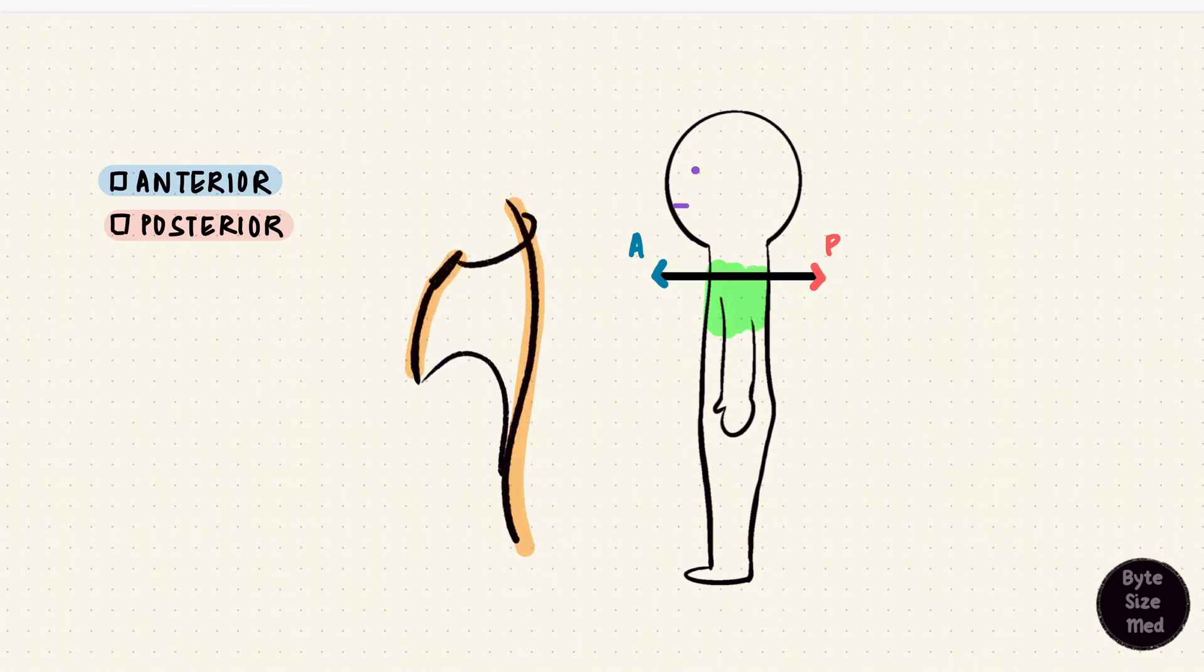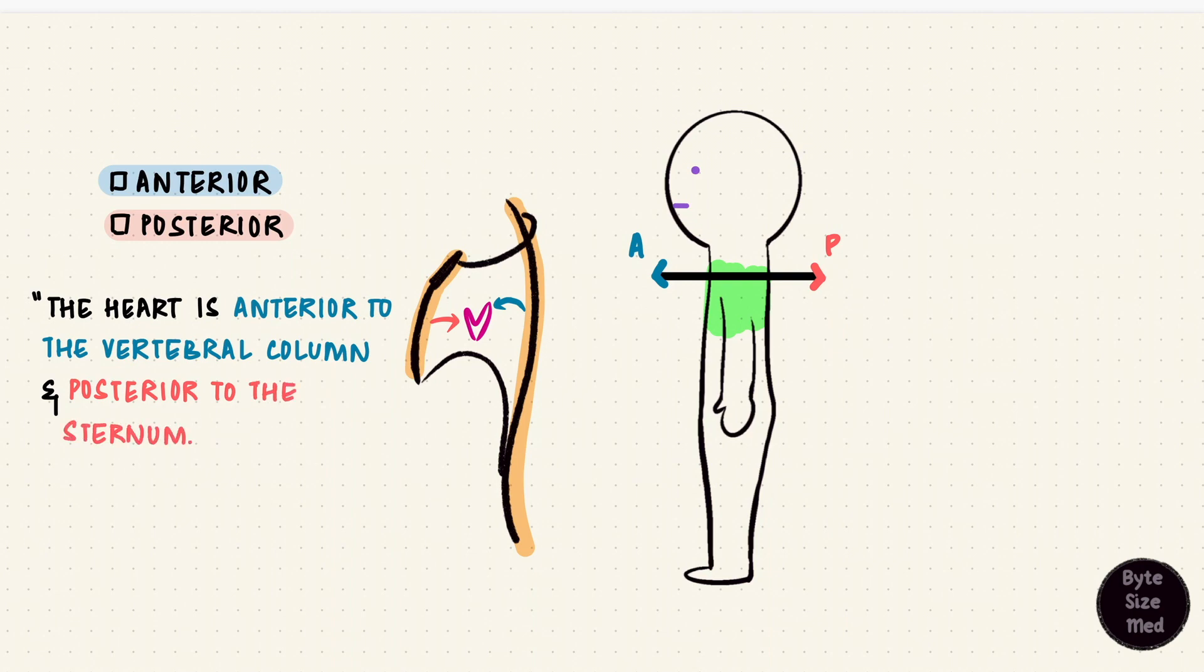If we look at this area here, in front we have the sternum and behind we have the vertebral column. The heart is between the two, behind the sternum and in front of the vertebral column. Saying the heart is anterior and stopping the sentence just doesn't make much sense. It's like saying the heart is in front of and then saying nothing more. The heart is anterior to the vertebral column and posterior to the sternum. So you see it has to be in relation to another structure.